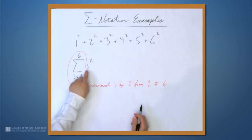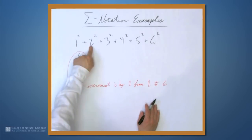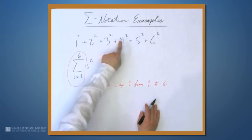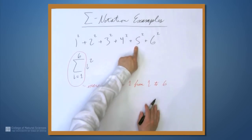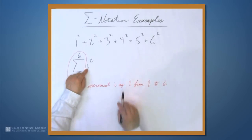All right, so we start at i equals 1 and we get 1², that's this. Then we add i equals 2 and we get 2², 3², 4², all right, i equals 5 gives us 5², all the way up to 6 where we plug in 6 for i and we get 6².